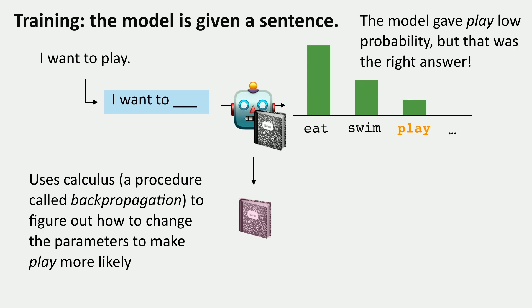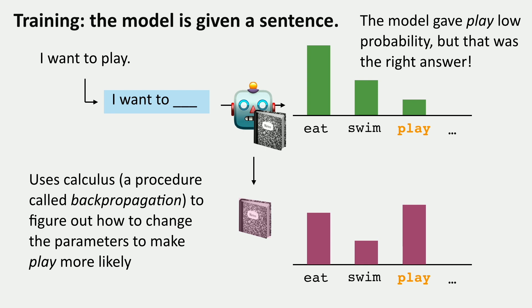This uses a bunch of calculus with a procedure called backpropagation. Essentially, it looks at all of the parameters and asks which ones can be changed, and how, in order to make the probability of 'play' go up. Maybe once we've done that, we get a distribution where 'play' is now more likely. Then we go through more data and see sentences like 'I want to swim' or 'I want to eat,' and eventually these things balance out at some final probability distribution.